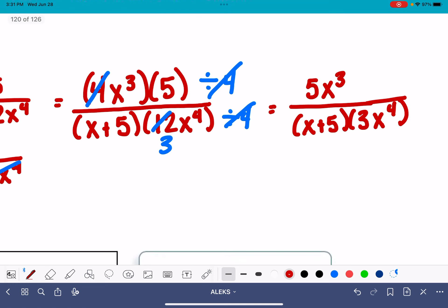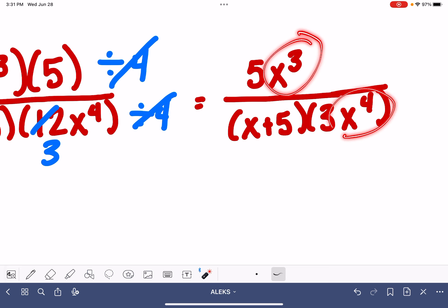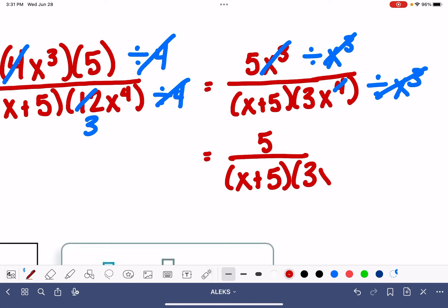Now I can also simplify some of the x's. I have x to the 3rd over x to the 4th. So I could divide the top and the bottom by x to the 3rd. And that's going to let me simplify. The x to the 3rds are going to cancel. x to the 4th divided by x to the 3rd, that's going to cancel out 3 of those x to the 4ths. So that's going to leave me with 5 over x plus 5 times 3x.